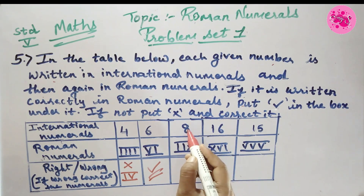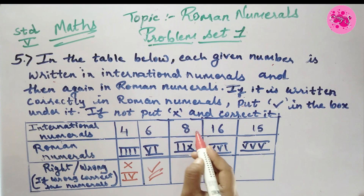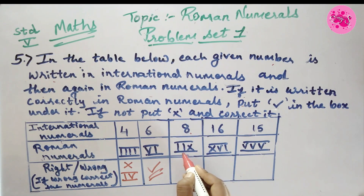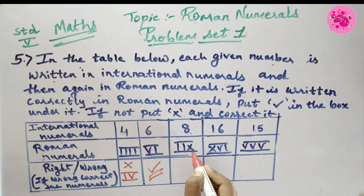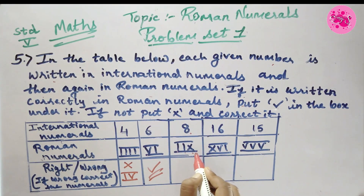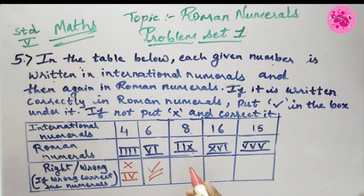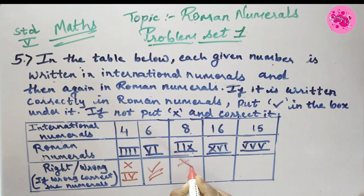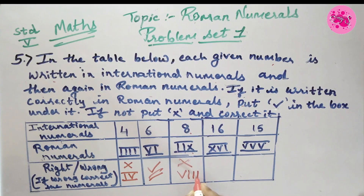Number 3: International numeral 8, and the Roman numeral IIX is given. But we never write 8 like this in Roman numerals, so it is wrong. Instead, we write it as VIII (V and III).